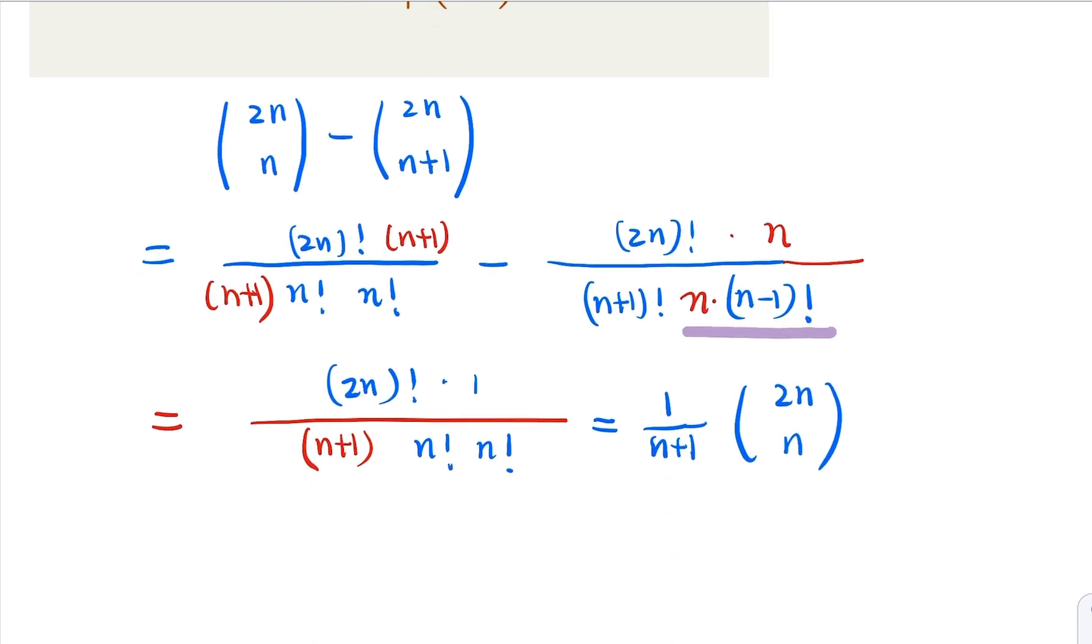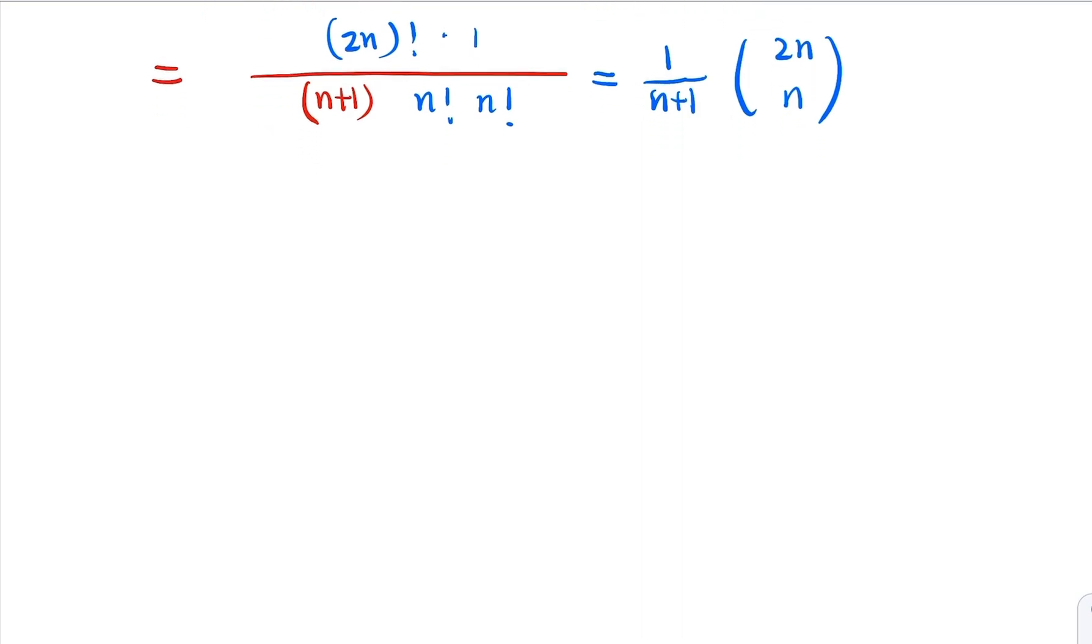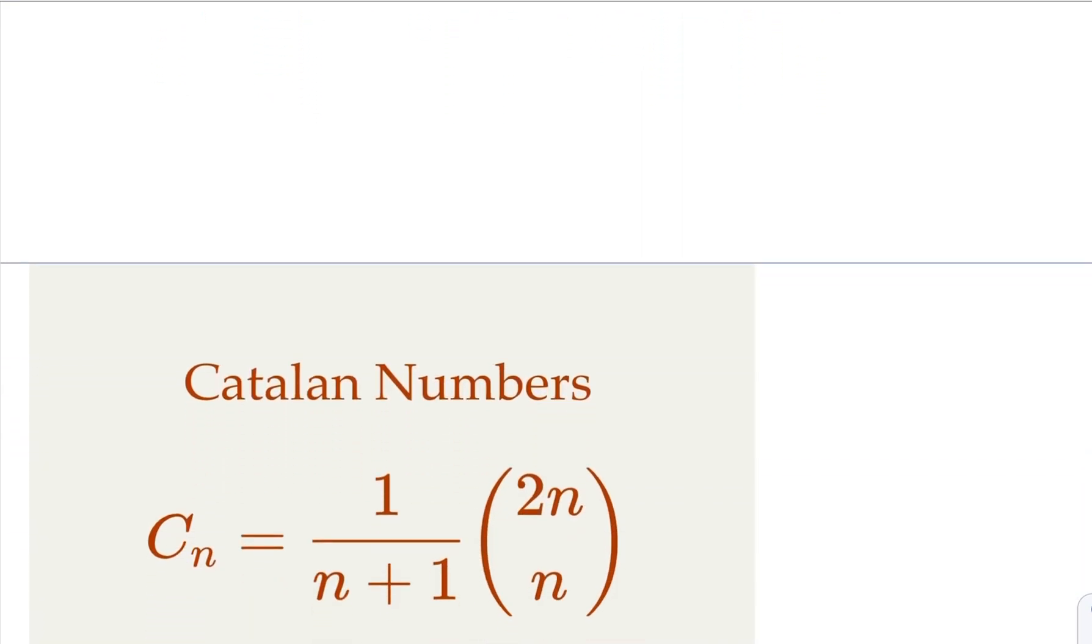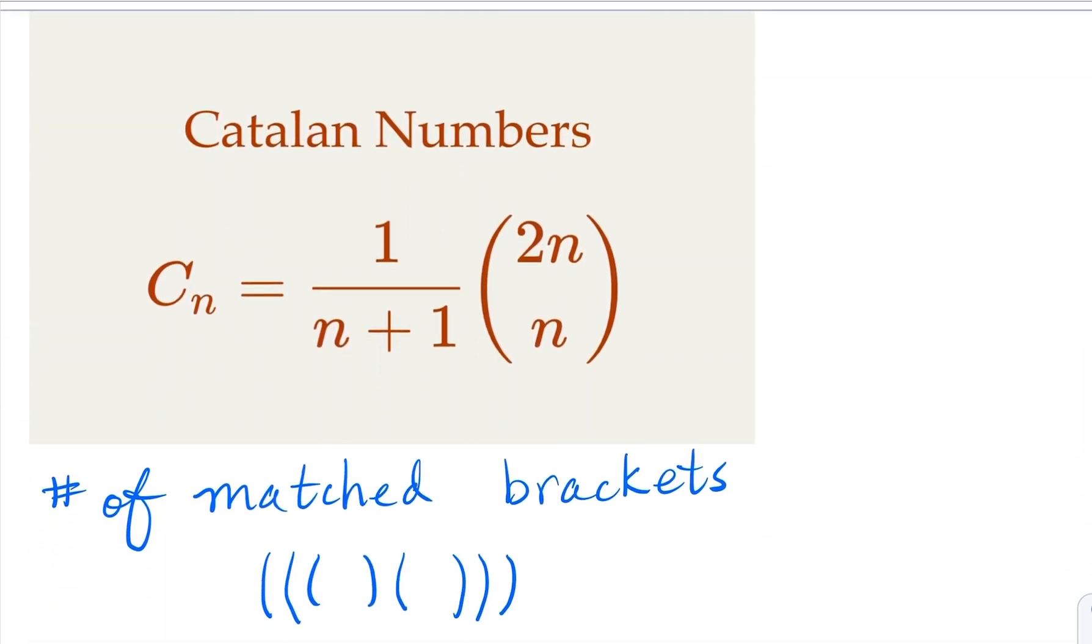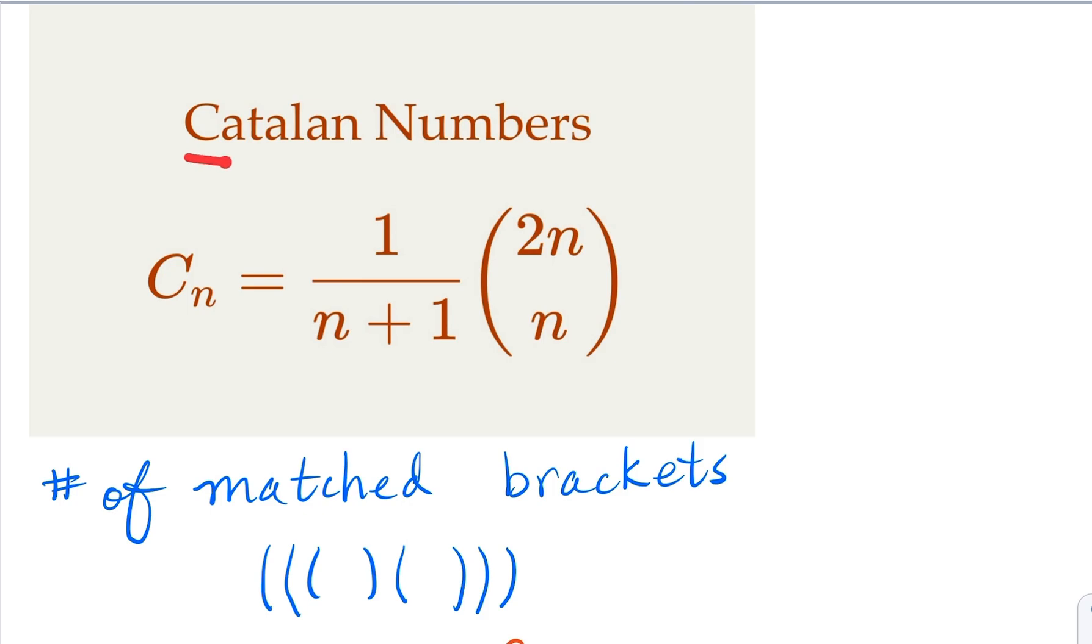So it turns out that this is actually used commonly in computer science. It's called Catalan numbers. Sometimes we say C sub n equals 1 over n plus 1 times 2n choose n. This is an integer because we just proved that.